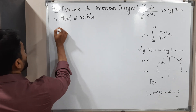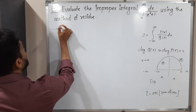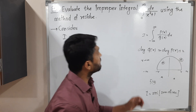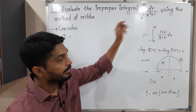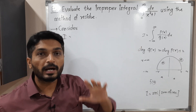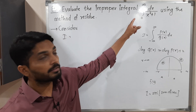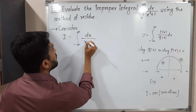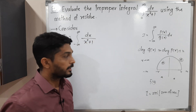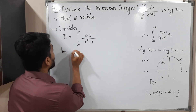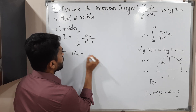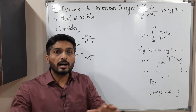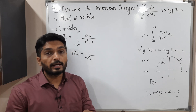Let us call the integral I. I equals the integral from minus infinity to infinity of dx/(x²+1). We also note f(z): just replace x by z, giving f(z) = 1/(z²+1). Consider a large semicircle centered at origin, lying in the upper half of the plane, with diameter along the real axis.